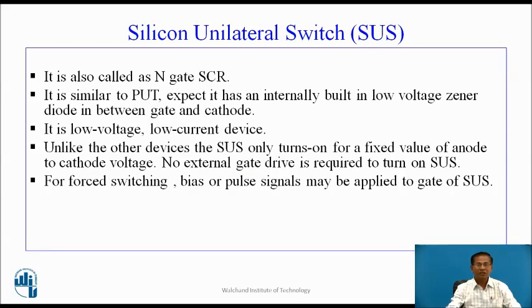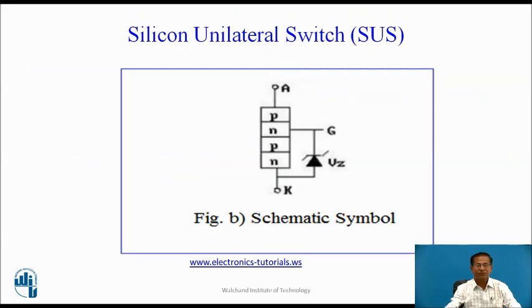It is low-voltage low-current device. Unlike the other device, the SUS only turns on for a fixed value of anode to cathode voltage. No external gate drive is required to turn on SUS. To turn on the SUS, it requires fixed anode to cathode voltage means VPN plus VG, it requires 0.7 plus VZ to turn on the SUS.